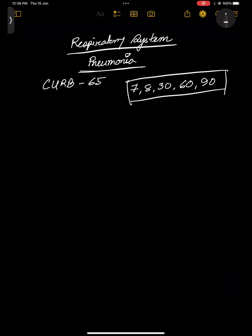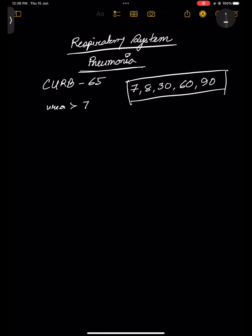If you can memorize this, you have already memorized CURB-65. What are these numbers? First, 7: if your urea level is more than 7 millimole. Then 8: if the mental test score, known as AMT (Abbreviated Mental Test Score), is less than or equal to 8 — meaning the patient is confused, their mental score will be low.